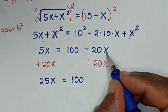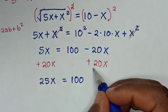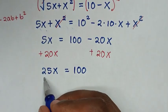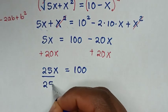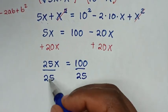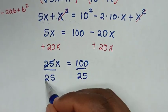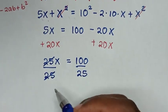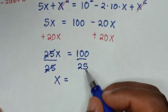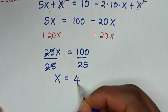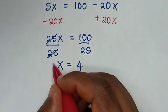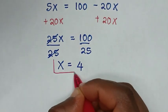Minus 20x plus 20x is 0. We then divide by 25 on both sides, so 25x divided by 25 cancels, giving x is equal to 100 divided by 25, which is 4. Therefore this is our final answer.